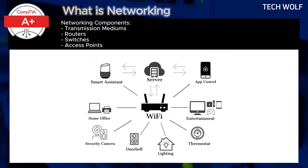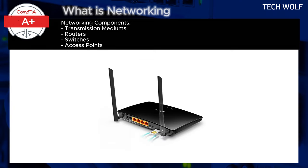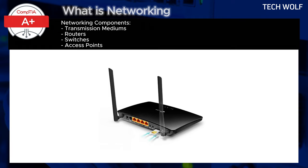For wireless networks, data is transmitted via electromagnetic waves, with Wi-Fi being the most common form. Routers direct data between devices on different networks, such as between a local network and the Internet. A router assigns IP addresses to devices on the network, ensuring that data is sent to the correct destination.